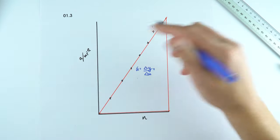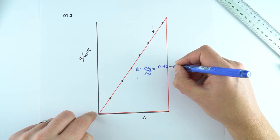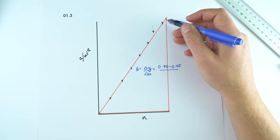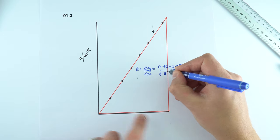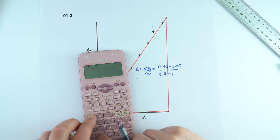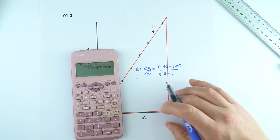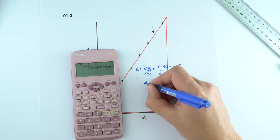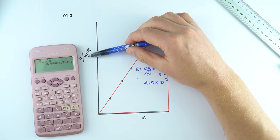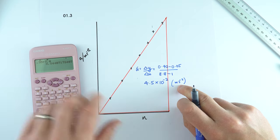The gradient equals change in y divided by change in x. The y values went from 0.40 at the top to 0.05 at the bottom; the x values went from 8.8 to 1. So the gradient = 0.35 / 7.8 = 0.04487, which I give to two significant figures as 4.5 × 10⁻². Strictly speaking, the units would be metres per second squared, though you don't need that for the mark.